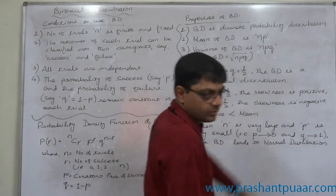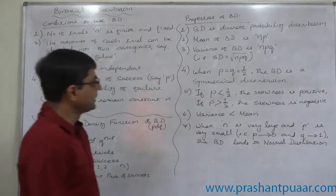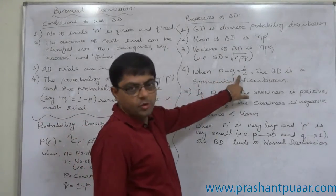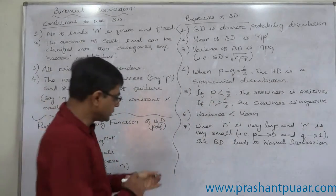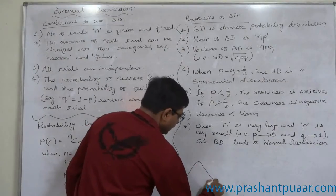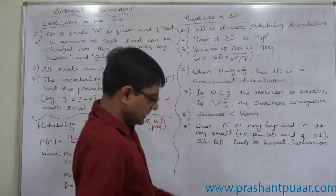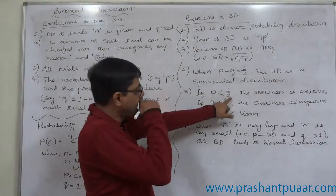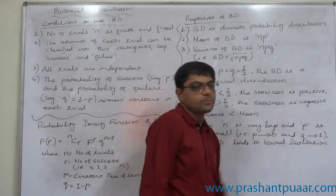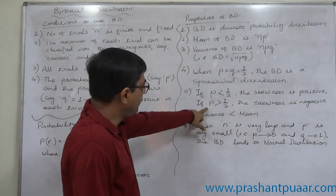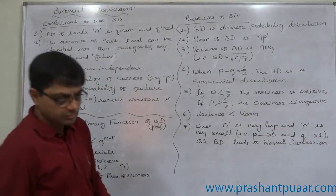When P equals Q equals 0.5, the binomial distribution is a symmetric distribution, meaning the curve of the probability will be exactly bell-shaped. If P is less than 0.5, the skewness of the binomial distribution is positive (right skewed). And if the probability of success is greater than 0.5, the skewness is negative (left skewed).